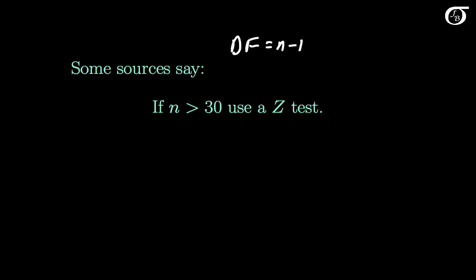Some sources say that if the sample size is greater than 30, just forget about the t-distribution and use the standard normal distribution. But if you are taking statistics with me, forget you ever heard such a thing — and many others feel the same way. If it is truly a t-statistic, we should be using the t-distribution.